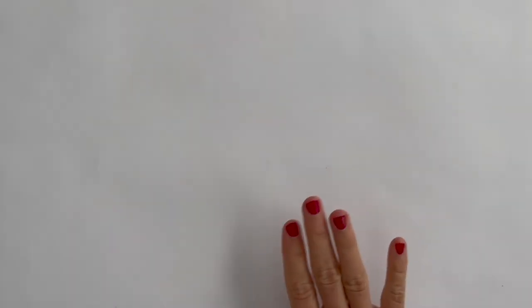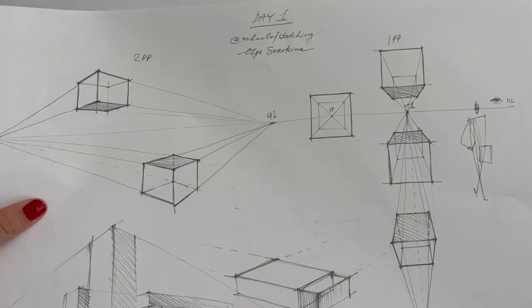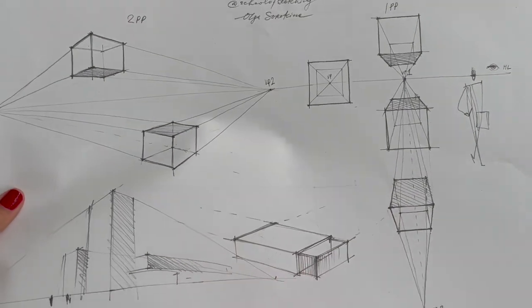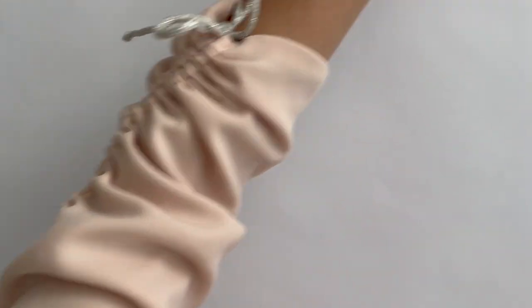In our previous lesson, day one, we understood the basics of one and two point perspective. So today, one more time, welcome to day two. We will talk about drawing circles in perspective, how to draw ellipses.